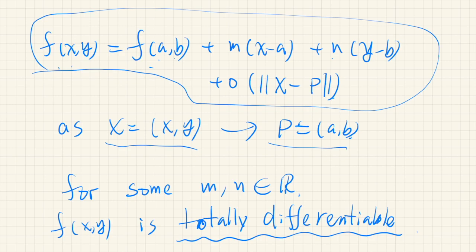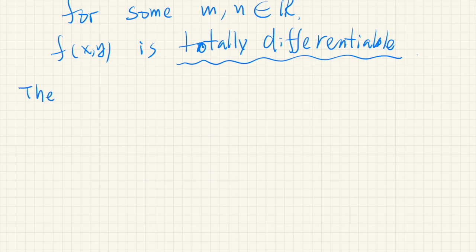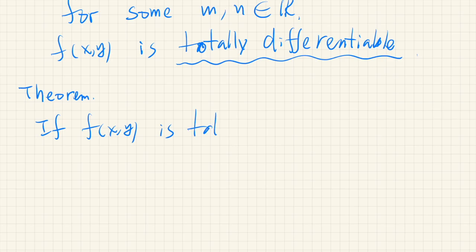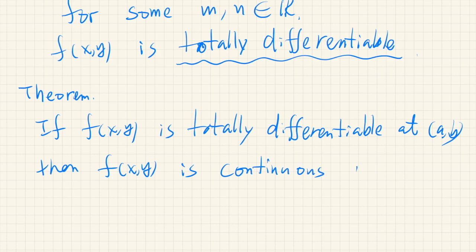Now we show that if a function is totally differentiable at point p, then it is also continuous at that point. Let's formalize this as a theorem: if f(x, y) is totally differentiable at (a, b), then f(x, y) is continuous at (a, b).